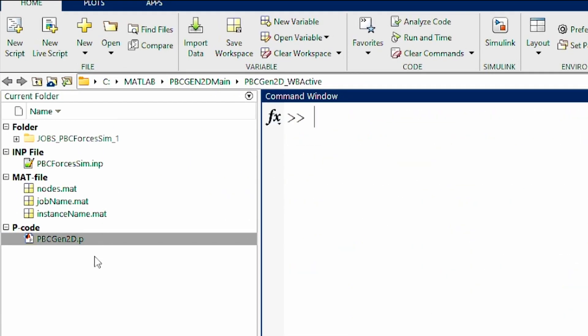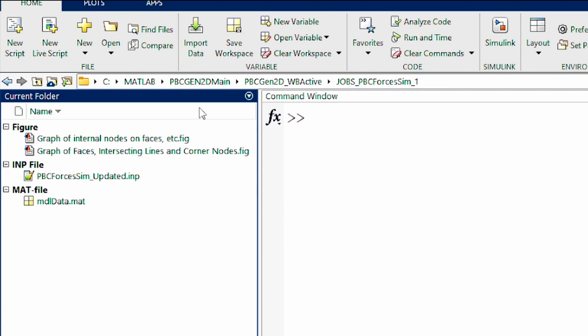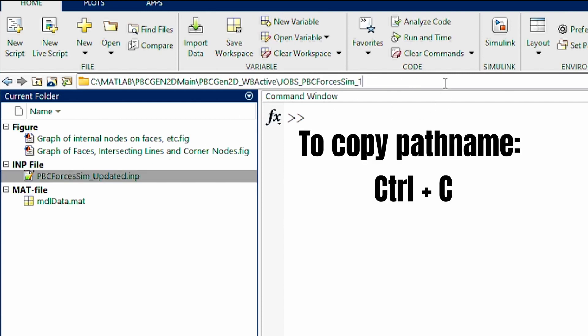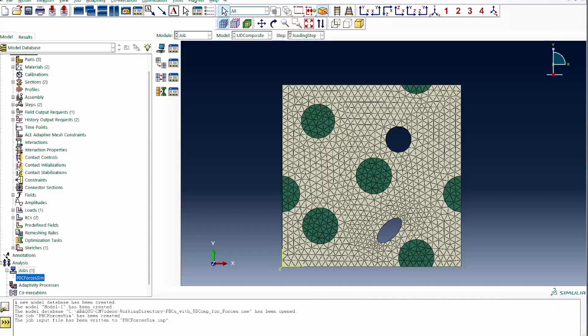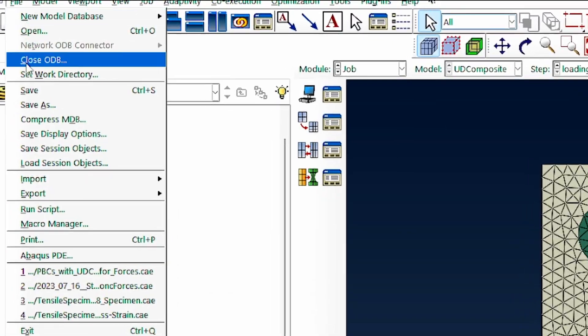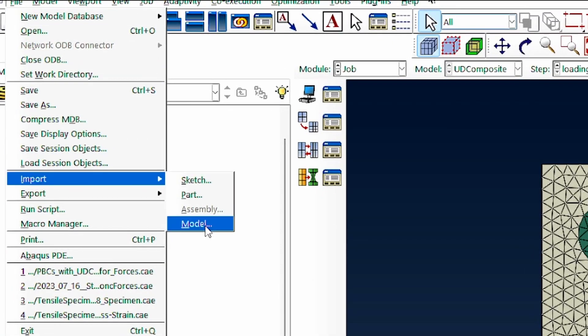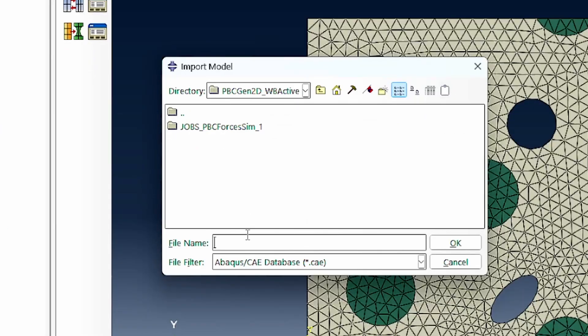All I need to do is call up that executable, PBCGEN2D. I'll type it and it wants me to select the file that we're interested in. I open it and it runs through. The first figure here contains all the corner nodes, every internal node, and all the nodes that make up the model. Clearly the one we're interested in is the boundary nodes, because these are the nodes we're going to use in applying periodic boundary condition on the domain.